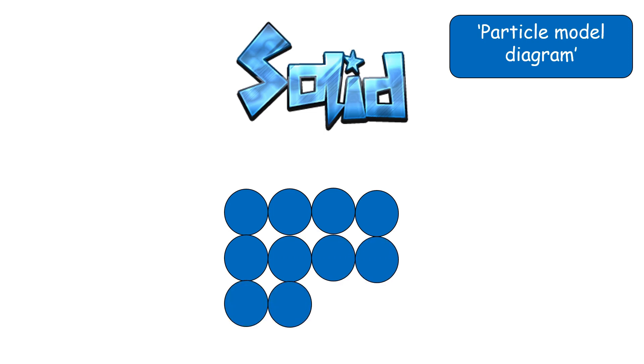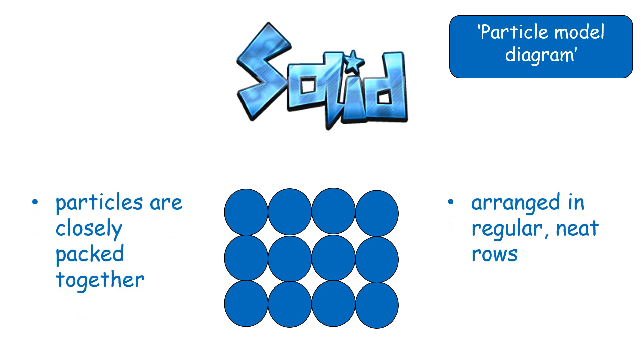Let's see how you got on. Your solid diagram should look something like this. You will notice that the particles are closely packed together, and they are arranged in regular, neat rows.